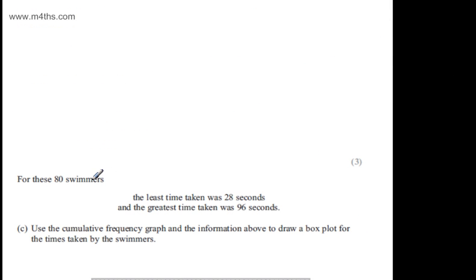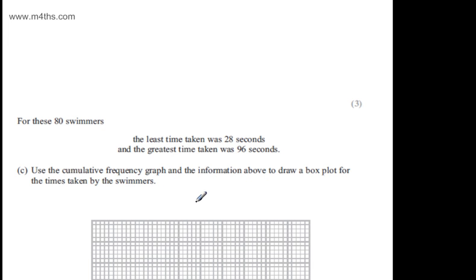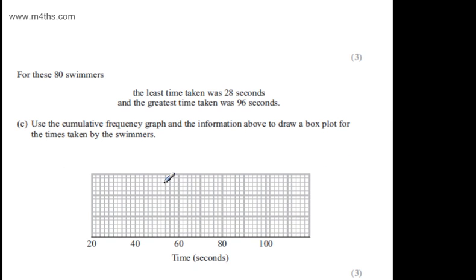OK. It now says for these 80 swimmers, the least time taken was 28 seconds and the greatest time taken was 96 seconds. In part C, it says use the cumulative frequency graph and the information above to draw a box plot for the times taken by the swimmers. The question carries three marks. So let's go ahead and put this information on.